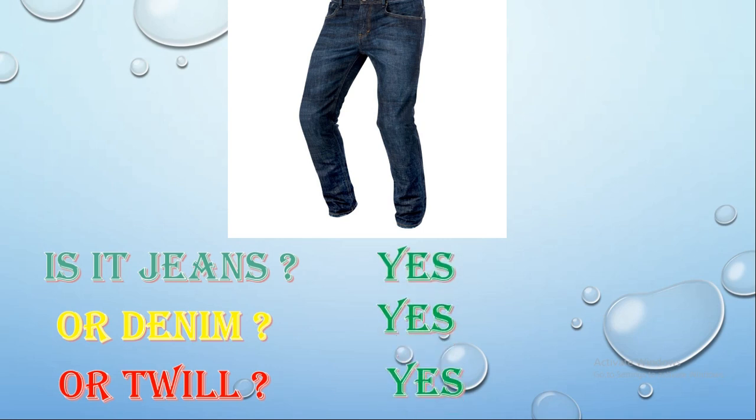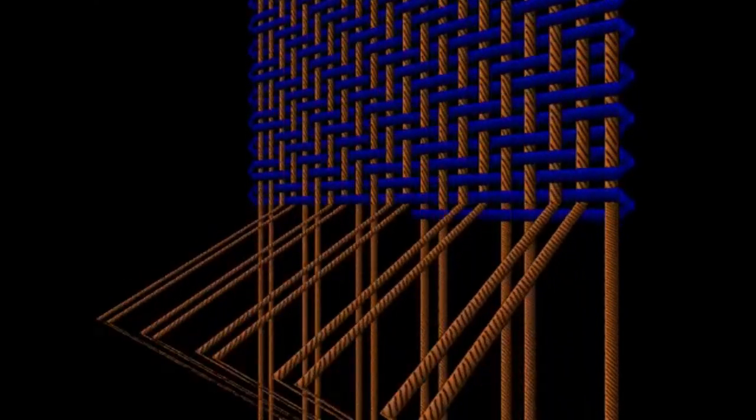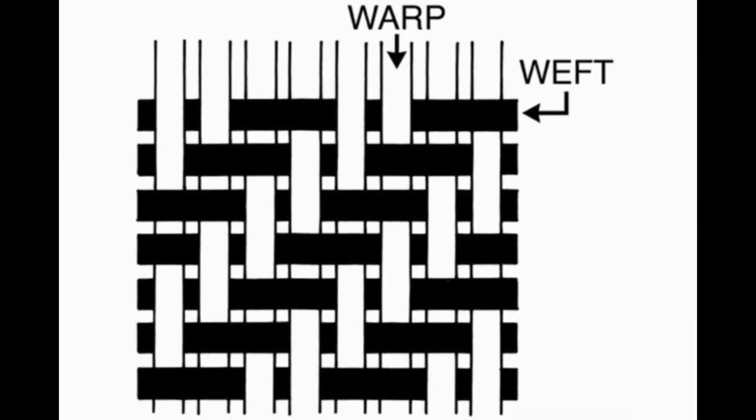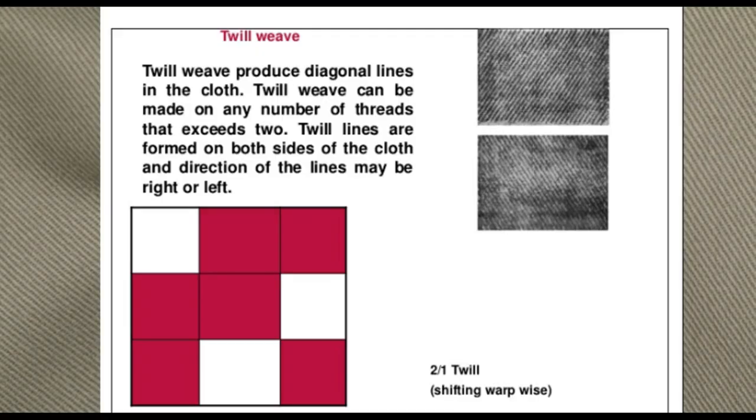Before clarifying this, let's know the definitions of denim, twill, and jeans. First, let's know about twill. Twill weave is the second major design after plain weave — a weave that repeats on three or more picks and produces diagonal lines on the face of the fabric.